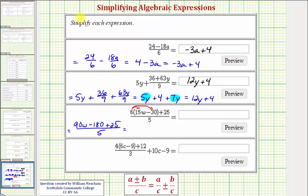Still simplifying the numerator, we do have like terms. Negative 180 plus 25 is equal to negative 155. So we have 90w minus 155 divided by 5. And now we'll divide each term in the numerator by 5. So we have 90w divided by 5 minus 155 divided by 5. Well, 90w divided by 5 is equal to 18w minus 155 divided by 5 is equal to 31. So we have 18w minus 31.